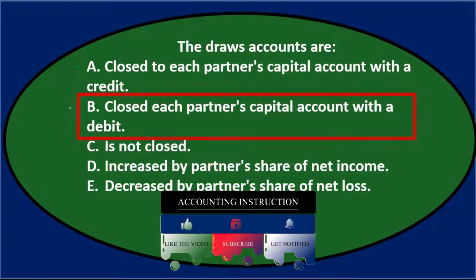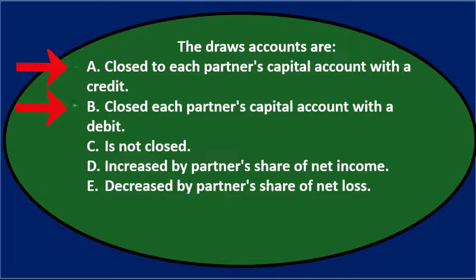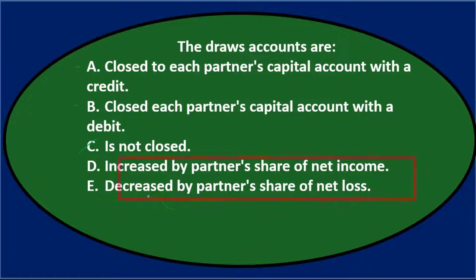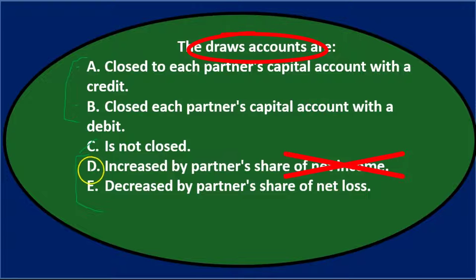B says closed to each partner's capital account with a debit — very similar to A, just differing on debit versus credit, which suggests one of those two is the answer. C says not closed — that's not true, it is closed, so we eliminate that. D and E say increased or decreased by the partner's share of net income — those are similar to each other, but net income closes to the capital account, not the draws account. So it's between A and B.